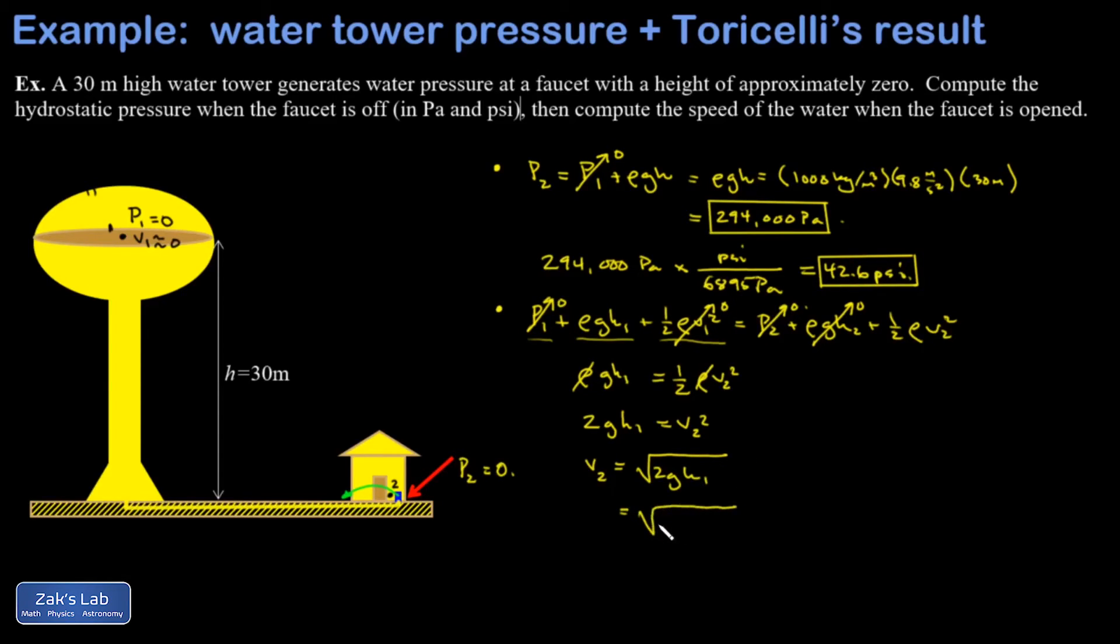And I could write that as the square root of 2 times 9.8 times 30. And when I crunch those numbers, I get a speed of 24.3 meters per second.